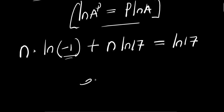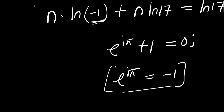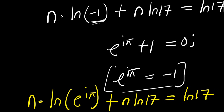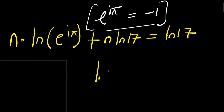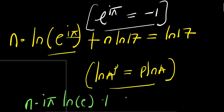For this negative 1 here, you have e to the power of i times pi plus 1 equals 0, meaning that e to the power of i times pi equals negative 1. Replacing this with negative 1 here, you have n times natural log of e to the power of i times pi plus n times natural log of 17 equals natural log of 17. Applying the power rule, i times pi will come out in front, so I have n times i pi times natural log of e plus n times natural log of 17 equals natural log of 17.